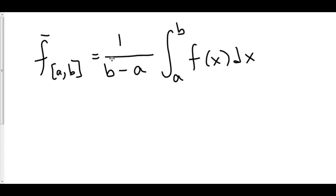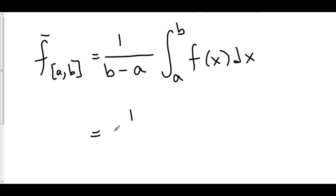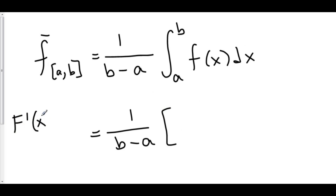Here we have the formula for the average value of a function f. Now I'm going to rewrite the integral from a to b of f of x dx using the Fundamental Theorem of Calculus, Part 2. We're going to call the derivative of big F of x little f of x, meaning that big F is the antiderivative of little f.